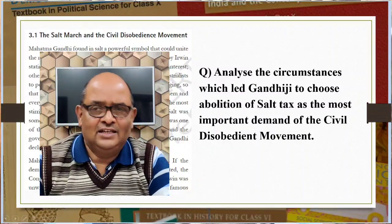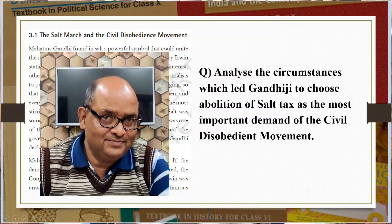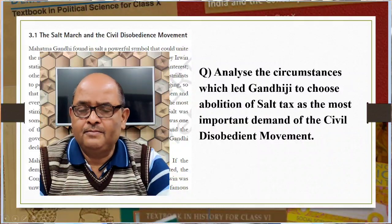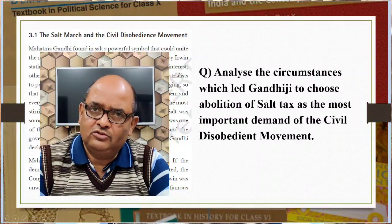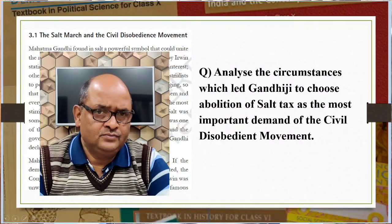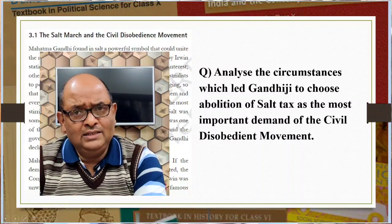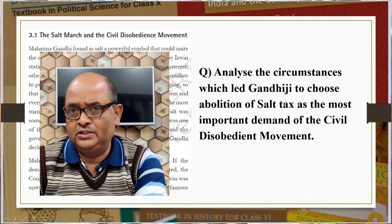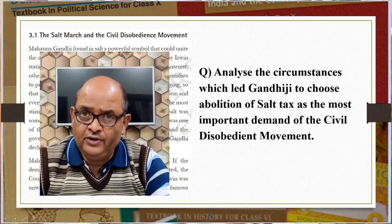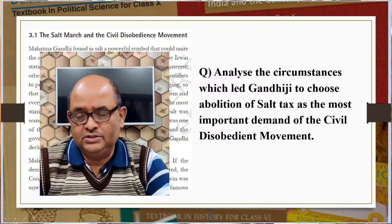Analyze the circumstances which led Gandhiji to choose abolition of salt tax as the most important demand of the civil disobedience movement. Mahatma Gandhi saw in salt a powerful symbol that could unite the nation. On 31 January 1930, he sent a letter to Viceroy Irwin stating eleven demands. The most stirring of all was the demand to abolish the salt tax. Salt was the most essential item of food and was consumed by both rich and poor alike. Mahatma Gandhi declared that the tax on salt and the government monopoly over its production revealed the most oppressive face of British rule. As the demands were not fulfilled, Mahatma Gandhi on 11th March started his famous Salt March with 78 volunteers from Sabarmati Ashram.